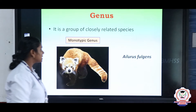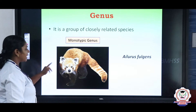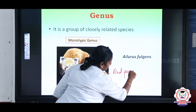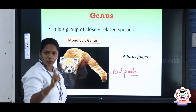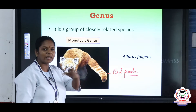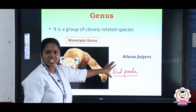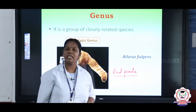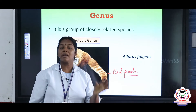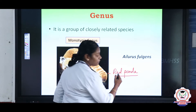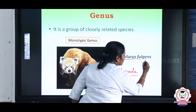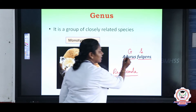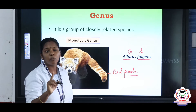The example of a monotypic genus is Ailurus fulgens — the red panda. There is only one species in this genus; no other pandas are included. So the scientific name of red panda is Ailurus fulgens, where Ailurus is the genus name and fulgens is the species name. Since only one species is included in this genus, it is said to be monotypic. Note down the common name as well as the scientific name of organisms we study throughout this lesson.